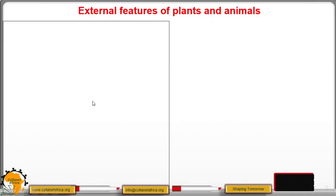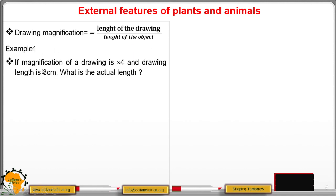Using this formula, drawing magnification is given by the length of the drawing over the length of the object. So how do we apply this formula? For example, if magnification of a drawing is times four.